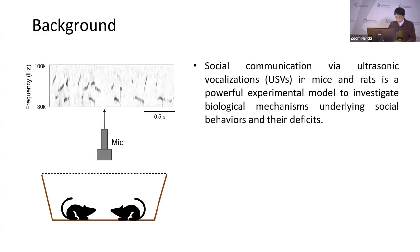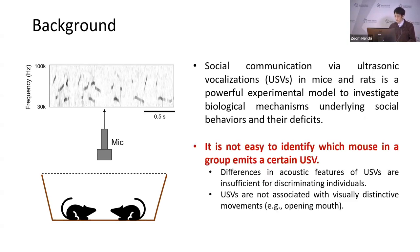As we have seen in the previous lectures, social communication via ultrasound vocalization in mice and rats is a powerful experimental model to investigate biological mechanisms underlying social behavior and their deficits. However, it is not easy to identify which mouse in a group emits a certain USV, because differences in acoustic features of USVs are insufficient for discriminating individuals.